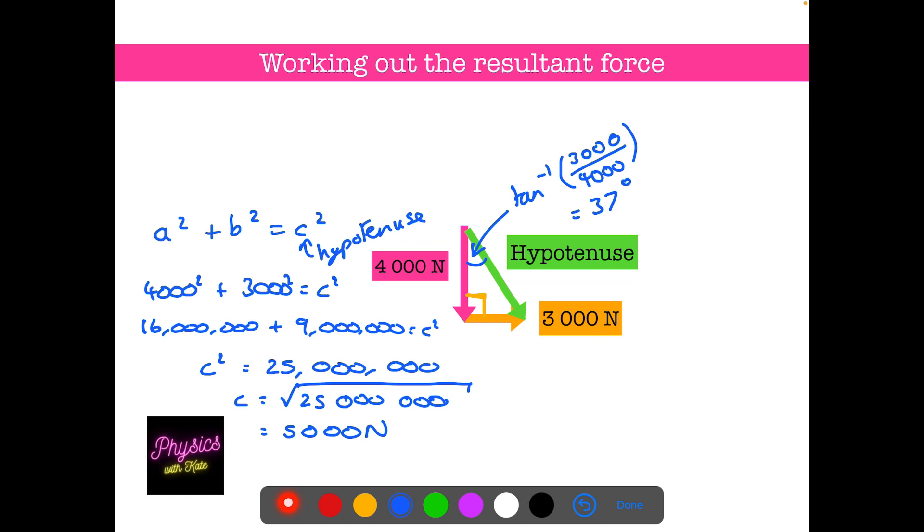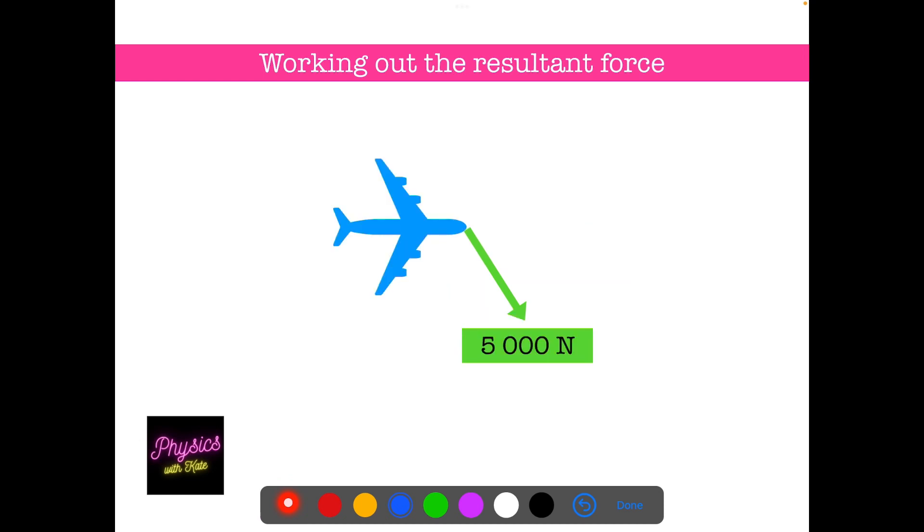So there we go. So our answer now is that the resultant force is 5000 newtons and the angle, which I haven't drawn on here, so that angle is 37 degrees.